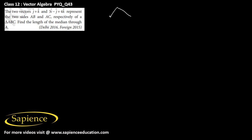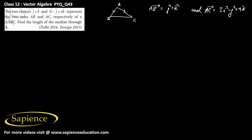Here it has been told that the vectors j+k and 3i-j+4k represent the two sides AB and AC respectively of a triangle ABC. The vector AB is given as j cap plus k cap, and the vector AC is given as 3i cap minus j cap plus 4k cap.